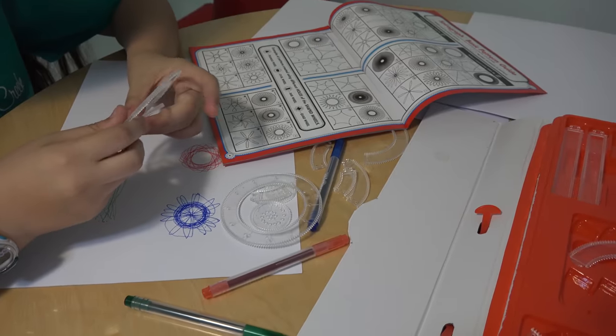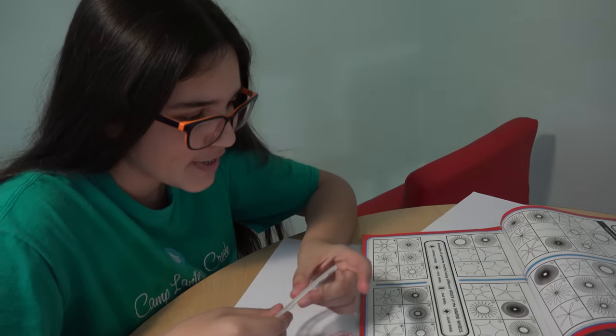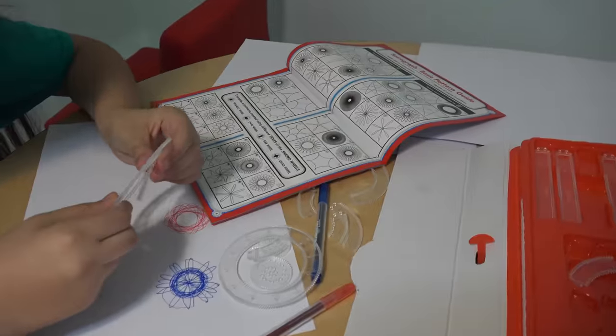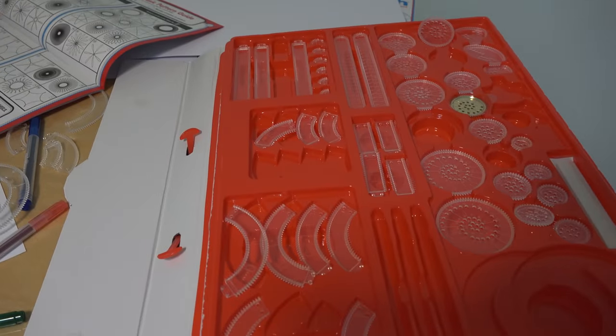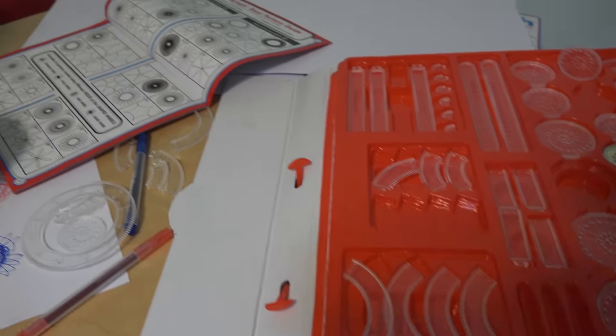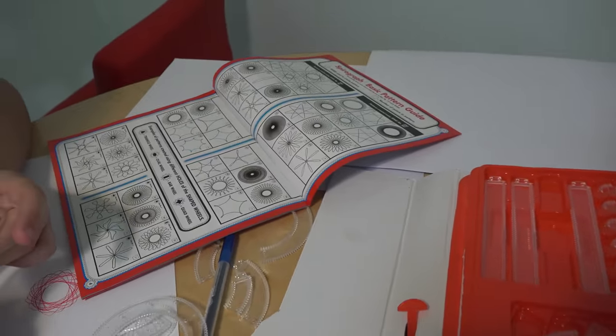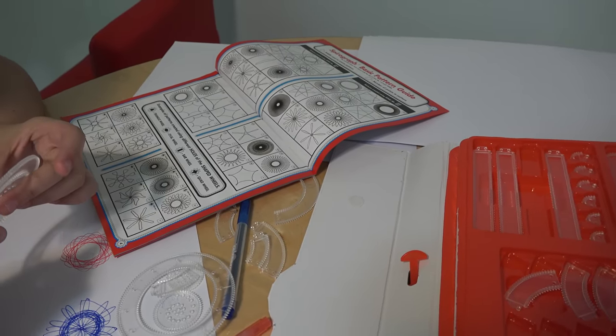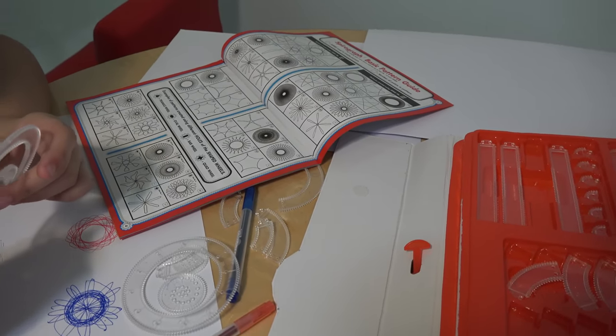So we took a little time and read the instructions, right? Oh, you did. Yes. And so it turns out everything's numbered. The wheels, the rings, all the pieces and you look for a design you'd like to make and they tell you which wheel to use or ring and which wheel and ring and which hole to put it in.